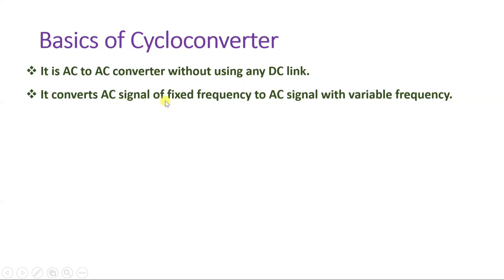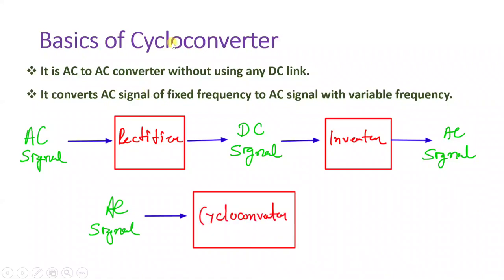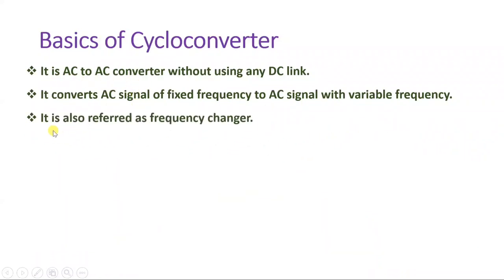A cycloconverter converts an AC signal of fixed frequency to an AC signal with variable frequency. There is another way to change frequency — converting AC into DC and then DC back to AC at a different frequency — but that is very bulky. In a cycloconverter, we directly convert one AC signal to a second AC signal, so it is also referred to as a frequency changer.